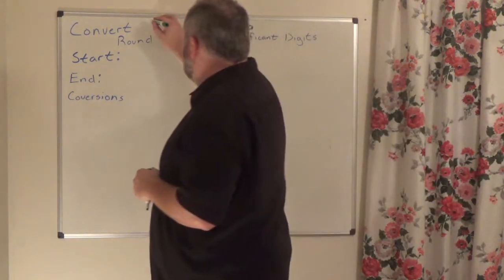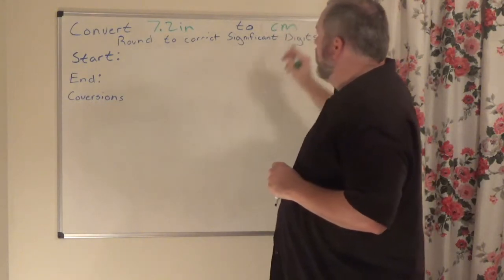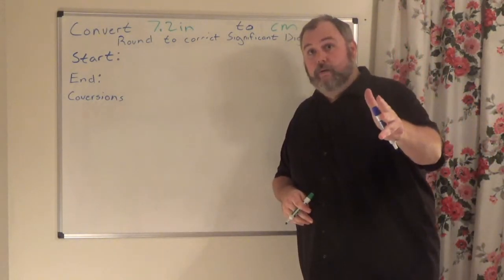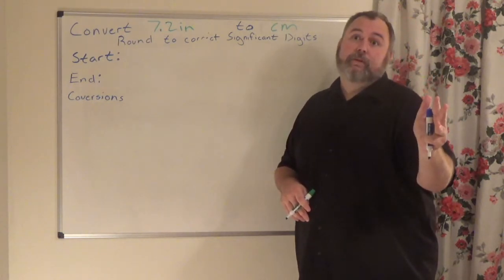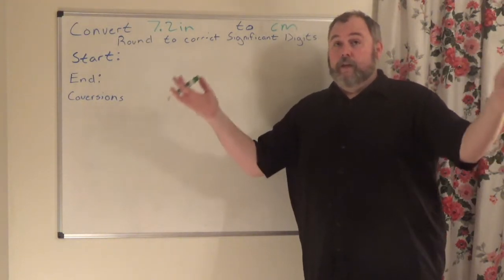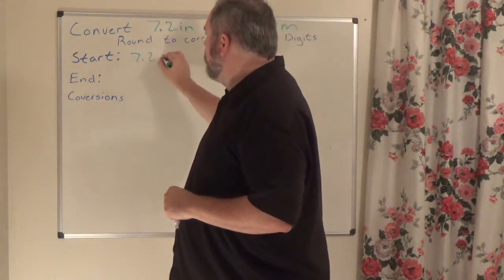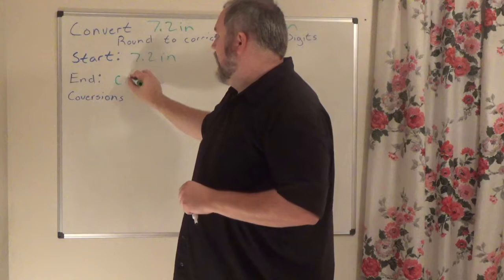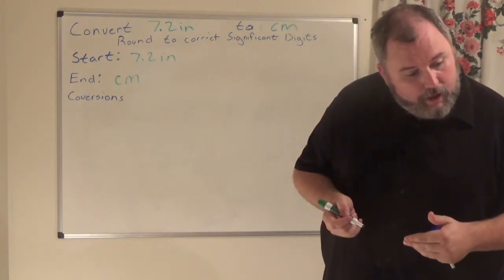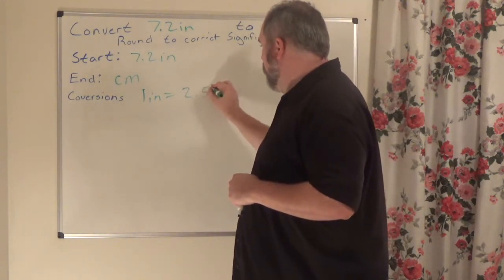I'm going from 7.2 inches and converting that into centimeters. Pause the video, try it on your own, look for the conversion factors. According to my conversion sheet, one inch is equal to 2.54 centimeters. Where do I start? 7.2 inches over 1. Multiplied by one conversion factor: inches goes on the bottom because I don't want inches, and 2.54 centimeters goes on top. Inches cancel out.